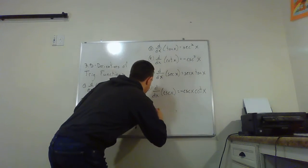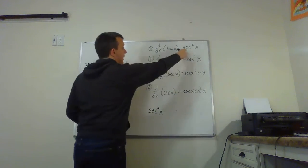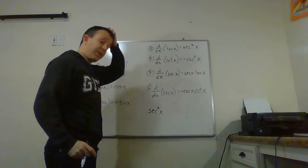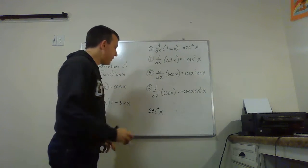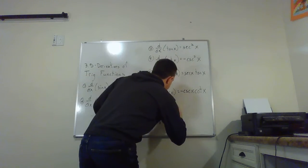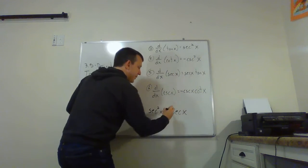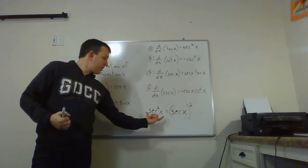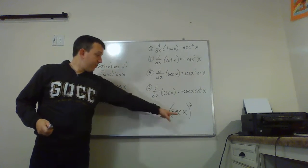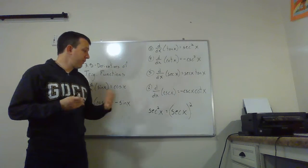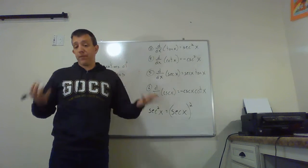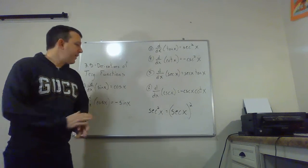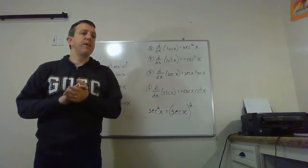I do want to point out one more thing: if you have something like secant squared x, which we had for the tangent derivative, sometimes people get a little confused about what that exponent is doing. Just remember that it's another way of writing secant of x raised to the second power. You find the secant of your x value and then square that answer. That's going to be really important when we get into the chain rule in section 6.